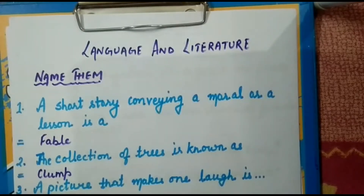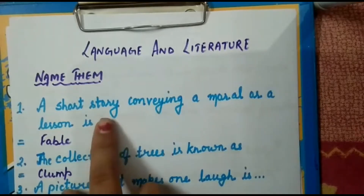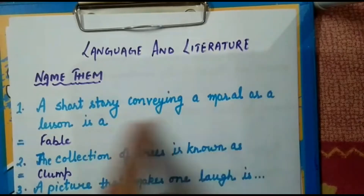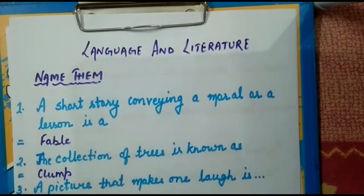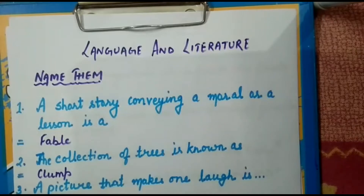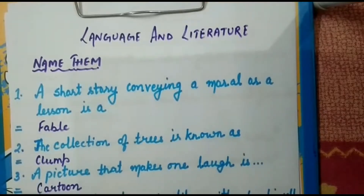The first one: a short story conveying a moral or a lesson is known as a fable. Children, you must have studied different kinds of stories, and every story has some or other moral. That moral story is known as a fable.